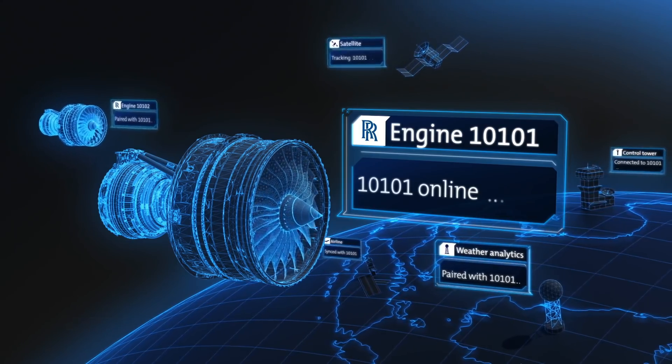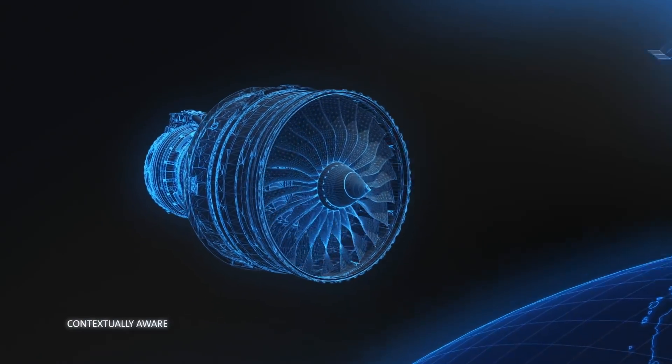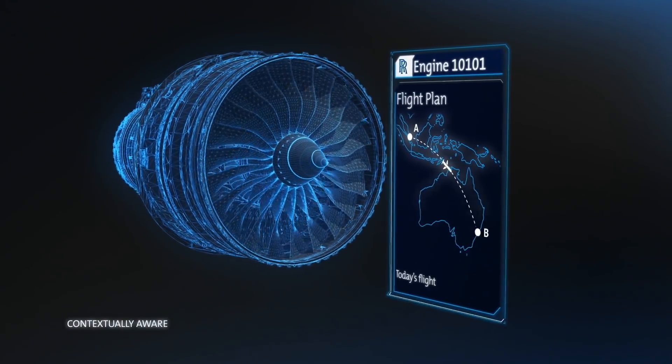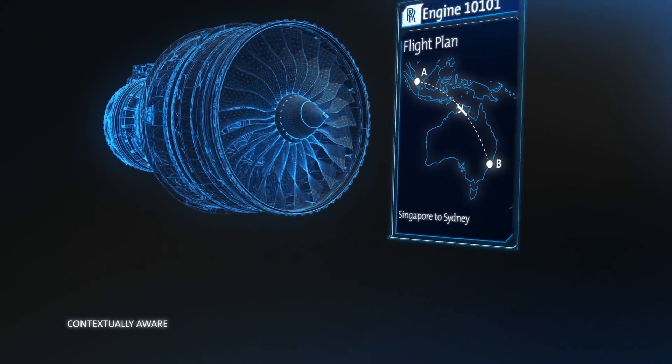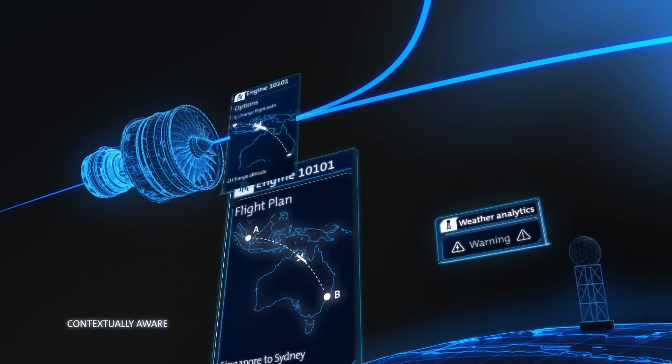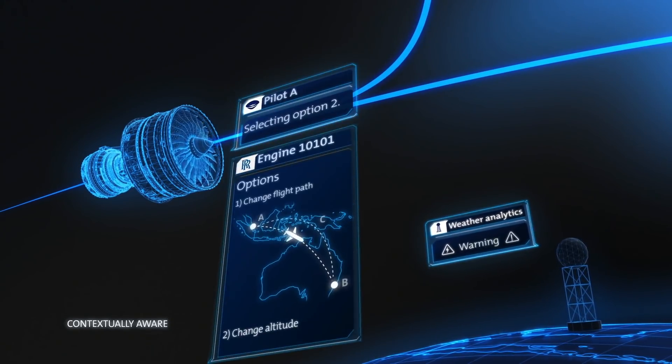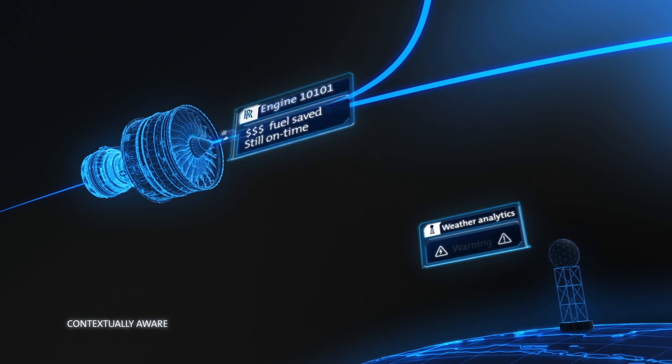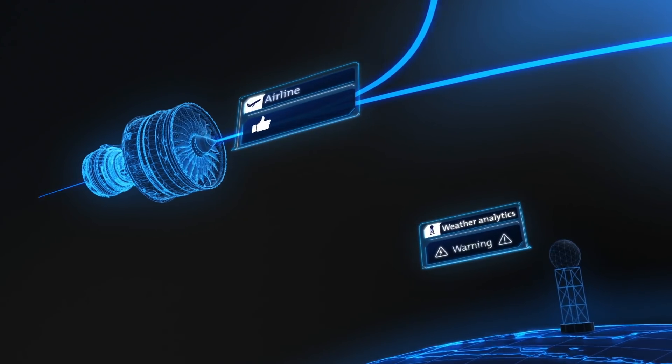It's contextually aware. Big data means that it's aware of its current operating context and the requirements of its airline, offering advice to minimize fuel burn and operational risk.